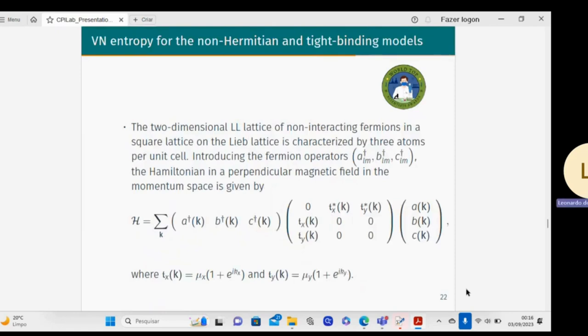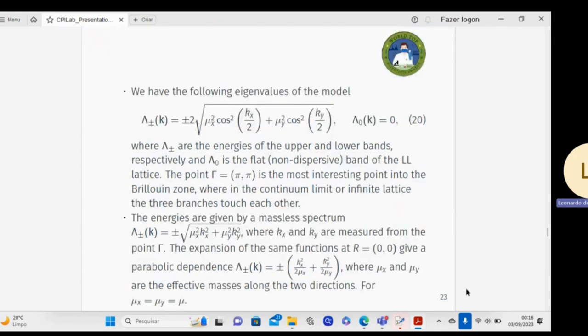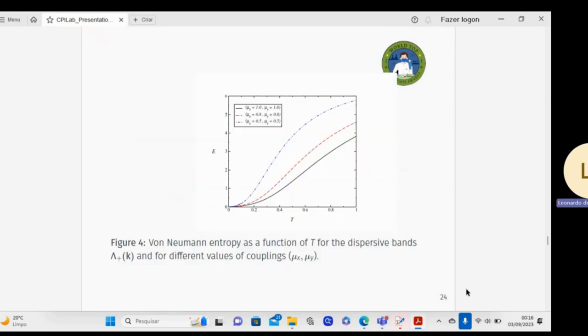The von Neumann entropy for the non-Hermitian tight-binding model. The model is expressed by the Hamiltonian, where Tx and Ty depend on the non-Hermitian coupling pattern. In this case, I have the following eigenvalues of the model given by equation 12. In figure four, I have the behavior of von Neumann entropy as a function of temperature for the dispersive bands of the model and for different values of coupling.